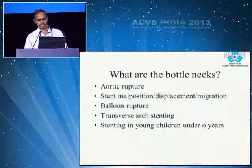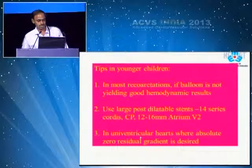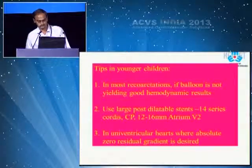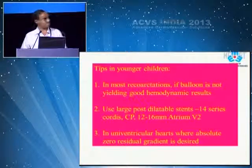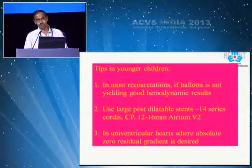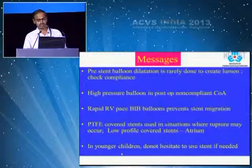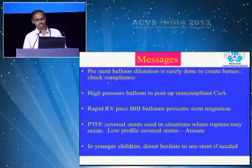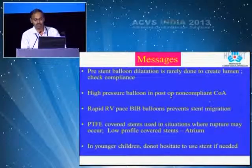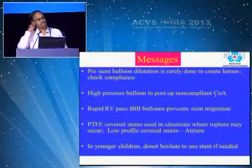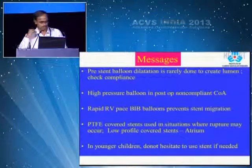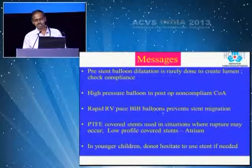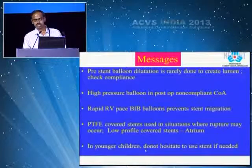The bottlenecks are aortic rupture, stent malposition, displacement or migration, and balloon rupture. There are difficulties in transverse arch stenting and in stenting under 6 years. Tips: in most recoarctations, if balloon is not yielding good results, use a stent and use large post-dilatable stents — either CORDIS stents, CP stents, or Advanta atrium. In univentricular hearts, even when gradients are quite low, stent them and target zero residual gradient. Pre-stent balloon dilatation is rarely done to create a lumen or check compliance. High-pressure balloons such as Atlas or Conquest are needed for post-op non-compliant coarctations. Rapid RV pacing, BIB balloons may prevent stent migration. PTFE covered stents are used where rupture may occur. In younger children, do not hesitate to use a stent if there is a need.